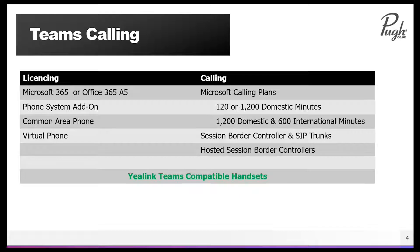Microsoft calling plans are okay in a small establishment. Once your establishment grows, it's not necessarily going to be the most cost-effective way for you to get calling within Teams. The other option is to use your existing SIP trunks, or to get SIP trunks and a session border controller which is Teams compatible, such as a Robin, and that connects your SIP trunks via an encrypted link to your Office 365 tenancy.